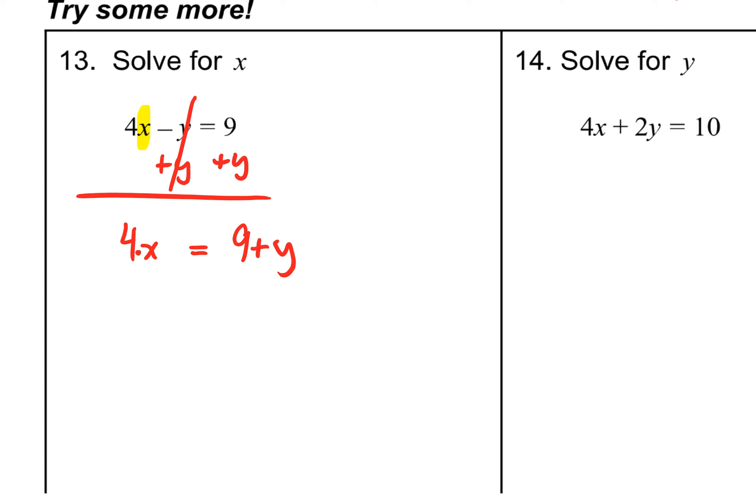That leaves us on the left side with 4 multiplied to x. But of course, we want to get x alone. We want to get rid of that 4. 4 is being multiplied to x, so the opposite of multiplying is dividing. We can divide this entire side right here. Look at our answer. You've got this big fraction. You've got 9 plus y up on top. Down below, you're dividing by 4.